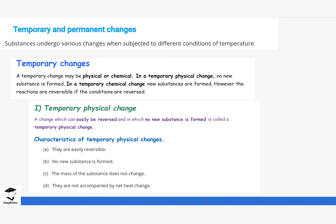Various substances, when subjected to heat, will behave differently — they undergo some changes. Those changes can be grouped either as physical or chemical. We have two large groups: physical and chemical, but they can further be divided into smaller groups — temporary physical, temporary chemical, and permanent chemical.